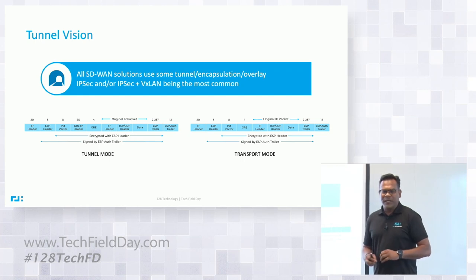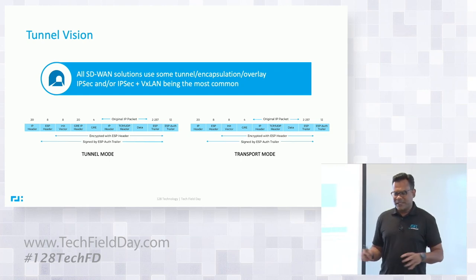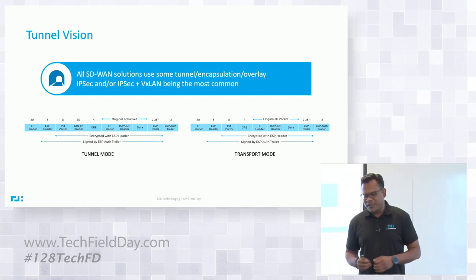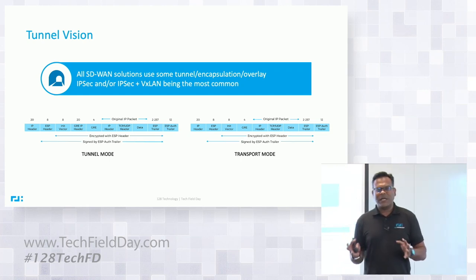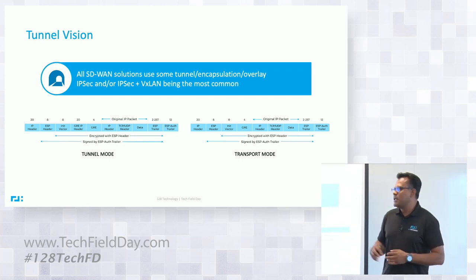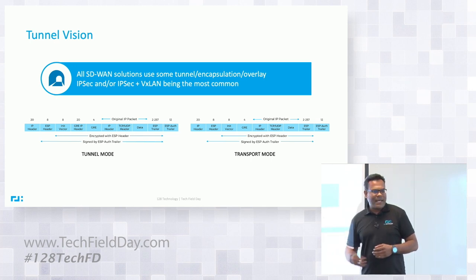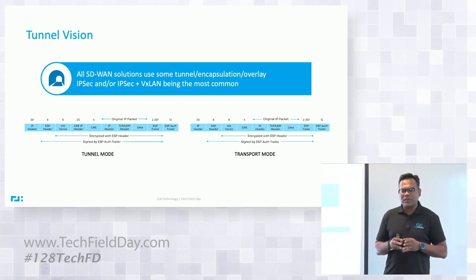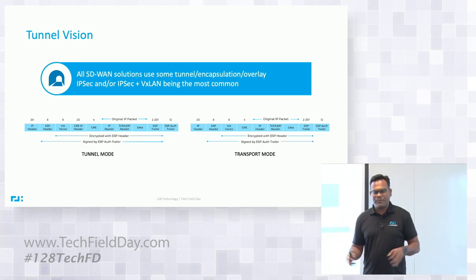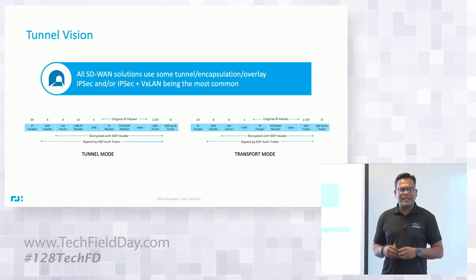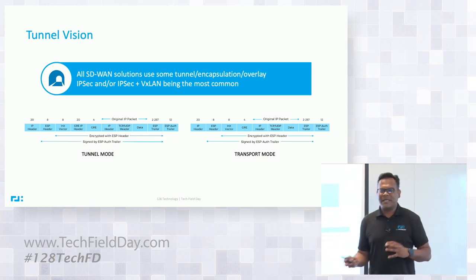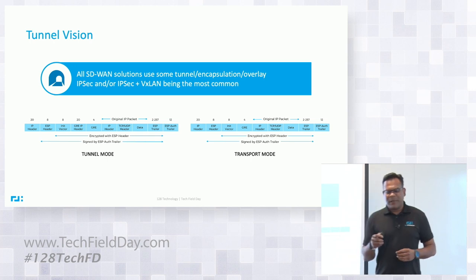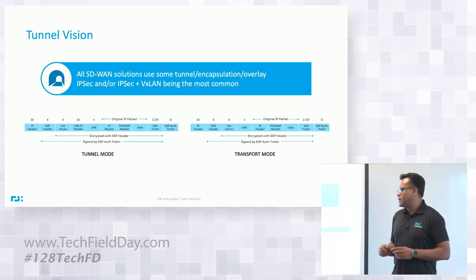Most SD-WAN solutions you see today — not from us, from any of our competitors — use IPsec tunnels plus some sort of tagging mechanism, because they also need to aggregate things into tunnels and be able to separate them out again. Some sort of VLAN tag or VXLAN tag plus IPsec and GRE header. That obviously adds a lot of bytes to the packet.